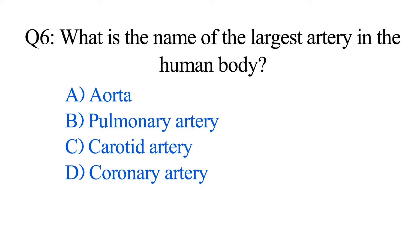Question number six. What is the name of the largest artery in the human body? Option A: Aorta. B: Pulmonary artery. C: Carotid artery. D: Coronary artery. The correct option is Option A: Aorta.